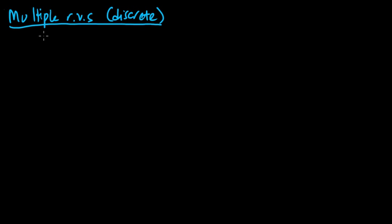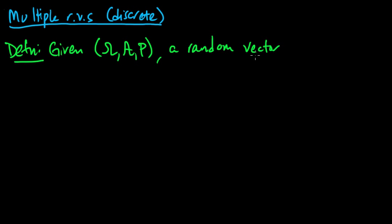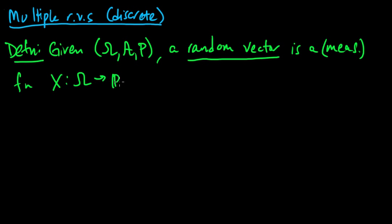So this is usually to model real-world phenomena. You have lots of random variables or a high-dimensional random variable. So let's start by defining, so given an underlying probability measure space, a random vector is a measurable, technically speaking measurable, function x from omega to R^d,